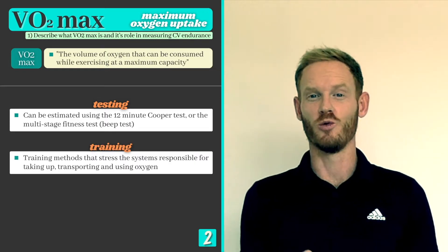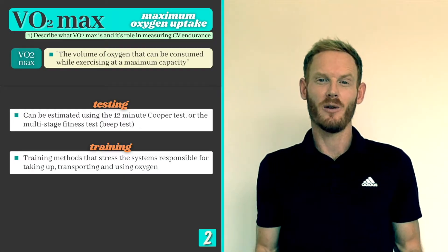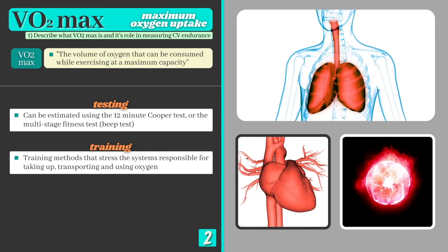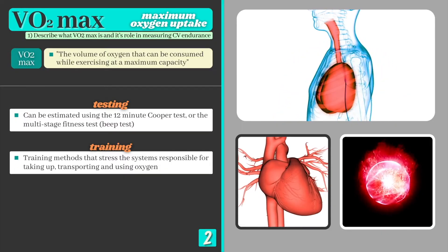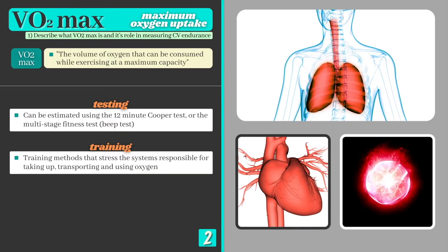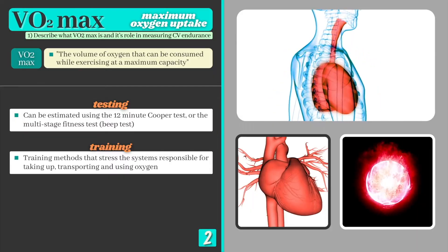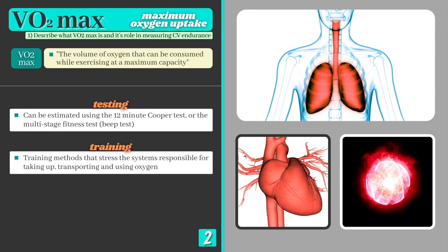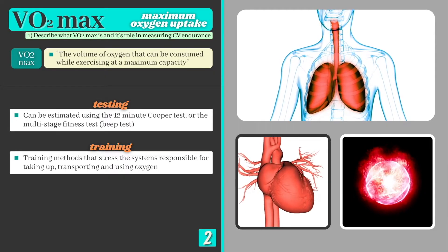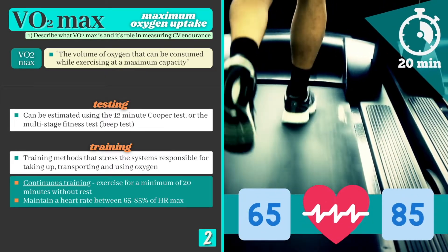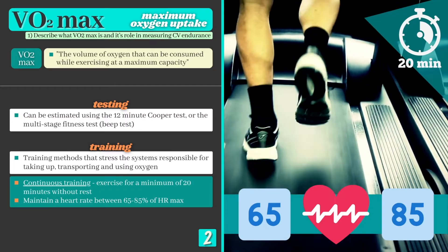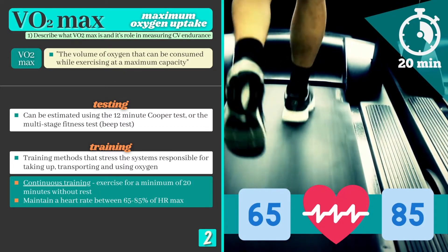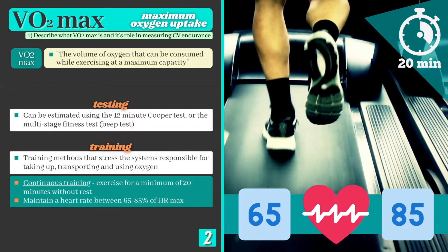What if your test results showed room for improvement? To increase your VO2 max level, you'd need to select a training method that stresses the systems responsible for the uptake, transportation and utilisation of oxygen — in other words, your respiratory, cardiovascular and aerobic energy systems. This means continuous training, where you exercise for a minimum of 20 minutes without rest periods, maintaining a heart rate between around 65 and 85% of your maximum.